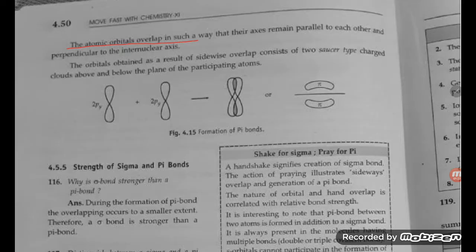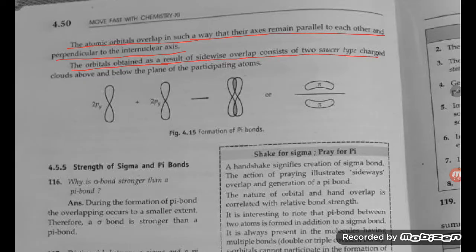The atomic orbitals overlap in such a way that their axes remain parallel to each other and perpendicular to the internuclear axis. The orbital obtained consists of two saucer-type charged clouds above and below the plane of the participating atoms.